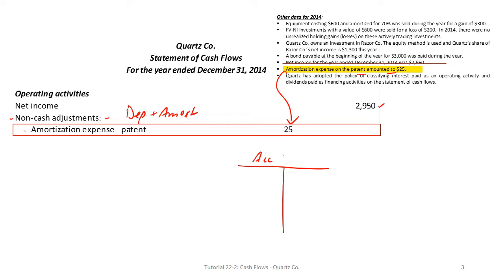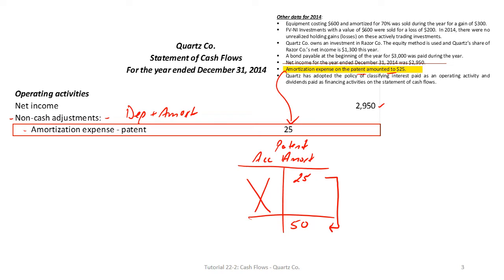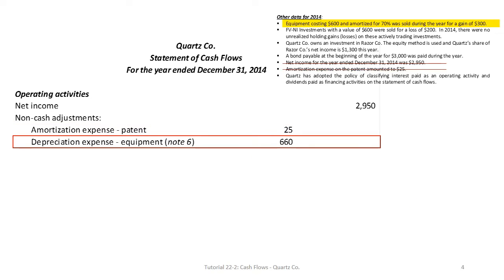An alternative way to determine depreciation or amortization on a capital asset is to reconstruct the accumulated depreciation account. For the accumulated amortization on the patent, the beginning-of-year balance is $25 and end-of-year is $50. There are no disposals, so to go from a beginning balance of $25 to an ending balance of $50 means the amortization expense had to be $25.